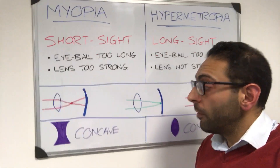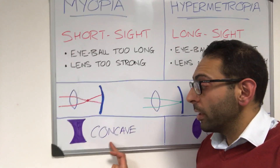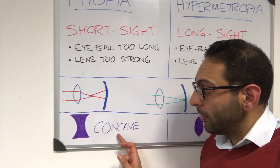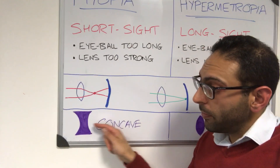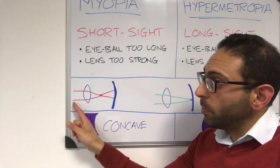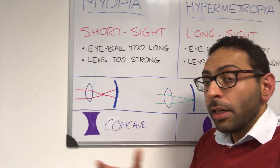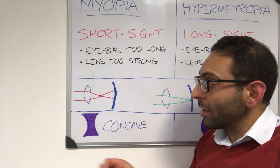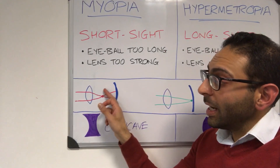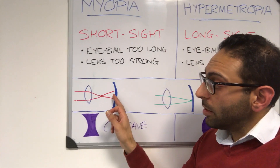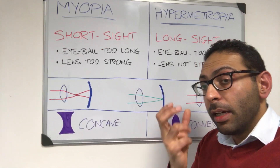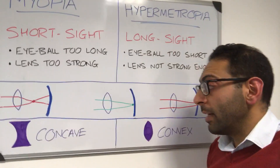How do you correct it? For short sight you use a concave lens. To remember the shape: 'cave' — it looks as if you're walking into a cave. This lens goes in front of your own lens, and the end result is that instead of focusing the light too early, the focus is shifted to land right at the retina, giving you that clearer image.